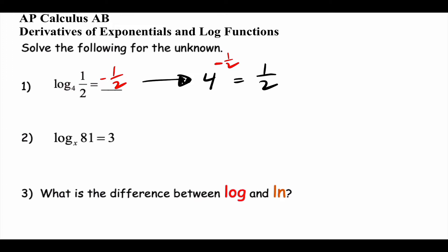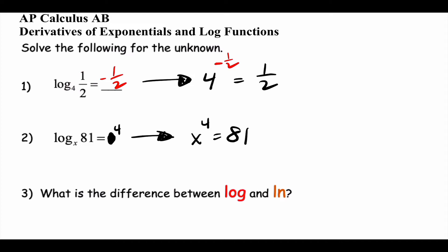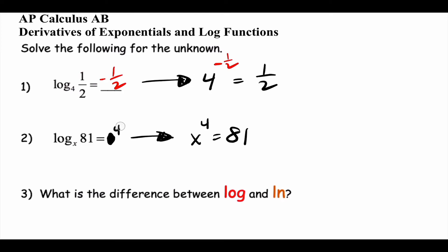This one says I don't have the base, but I know the power is going to be three and the answer is going to be 81. So x to the third power equals 81. I think there was a typo — it was supposed to be four, not x. So what to the third power equals 81? That's going to be three.